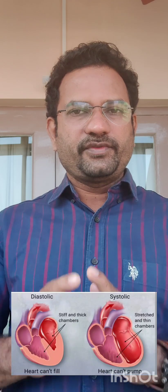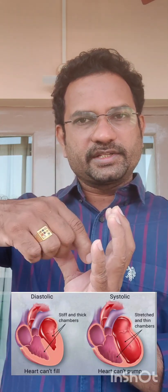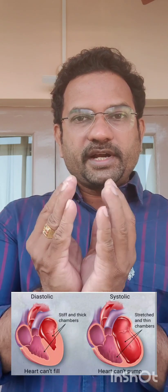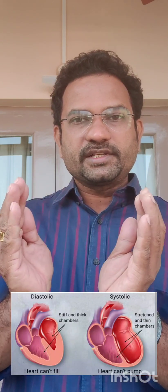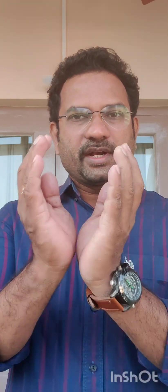When systolic heart failure is present, blood congestion in the heart increases. Blood pooling increases, and to accommodate the excess blood, heart size increases — this is called cardiac hypertrophy. When cardiac hypertrophy is present, it results in diastolic dysfunction. So systolic dysfunction leads to diastolic dysfunction.